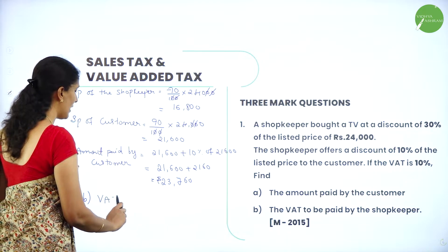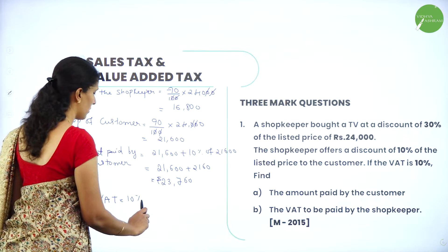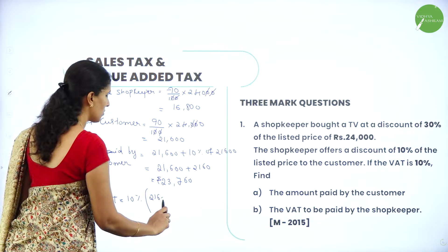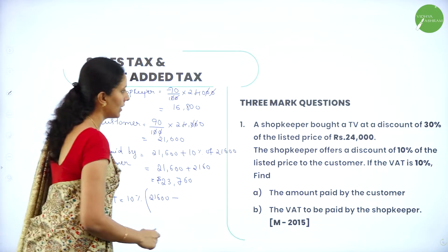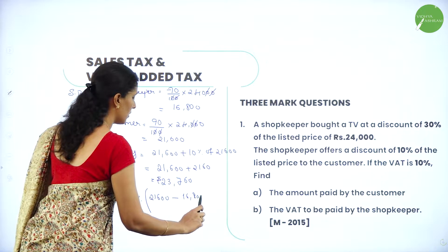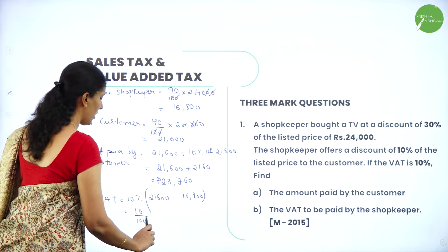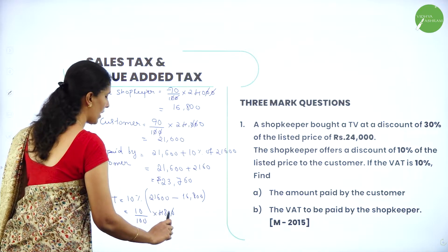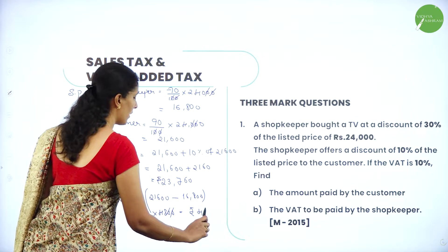Next, we calculate the VAT to be paid by the shopkeeper. VAT equals 10 percent of the selling price to the customer, which is 21,600, minus the selling price he paid, which is 16,800. So the difference is rupees 480.